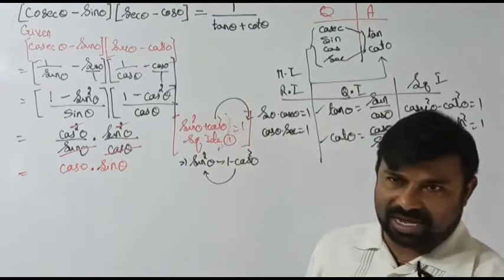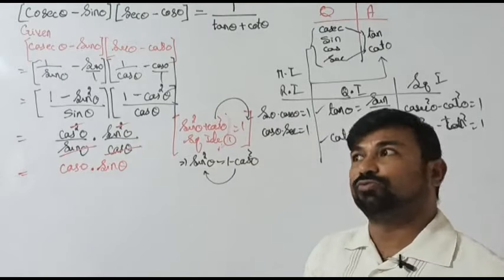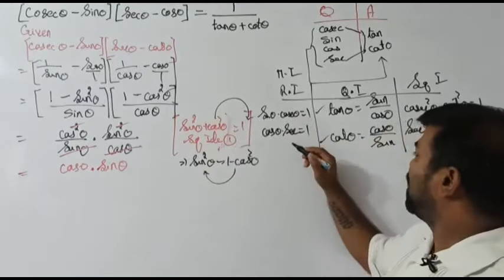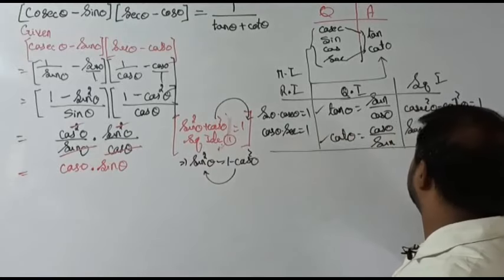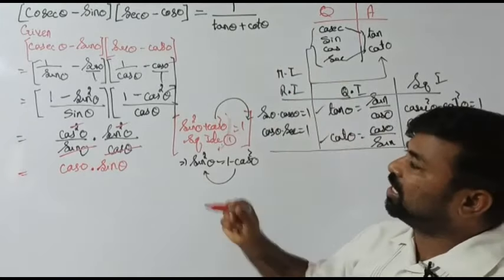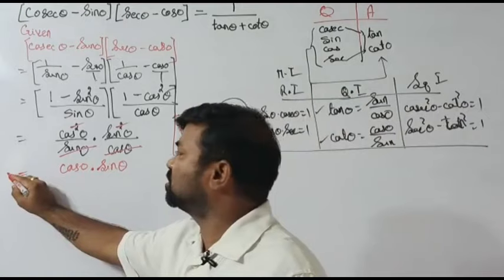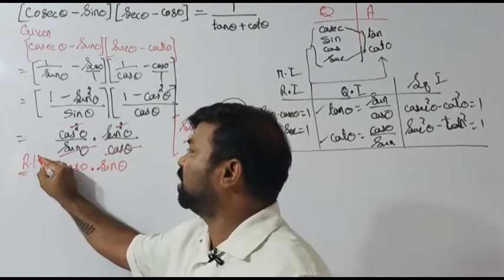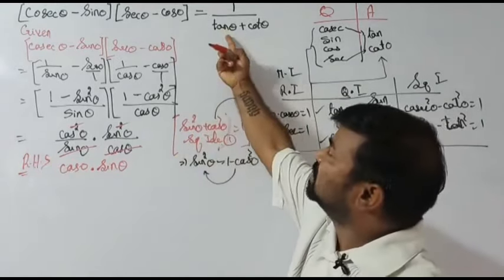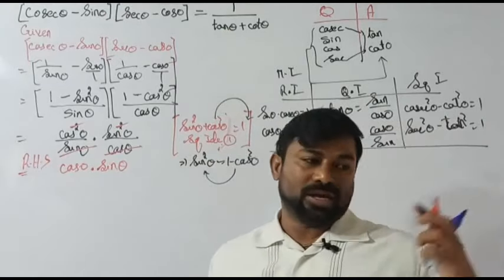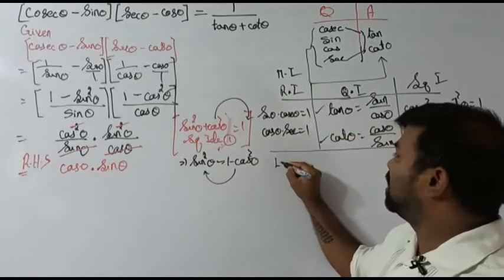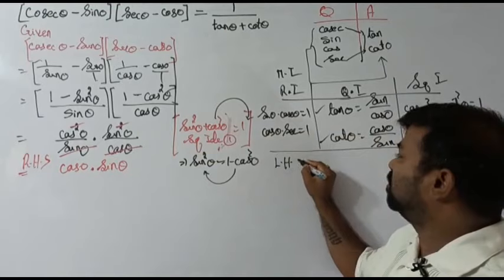Till here we are done. We are safe till here — this is the logical step we needed to do. I can call this result the RHS. So RHS equals cos θ into sine θ. Now let me consider the LHS part: 1 divided by tan θ plus cot θ.